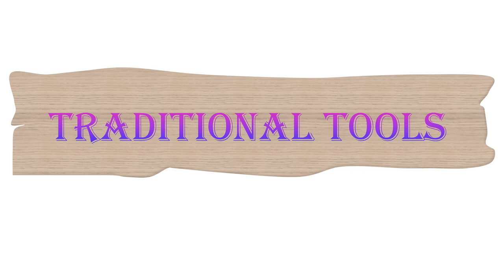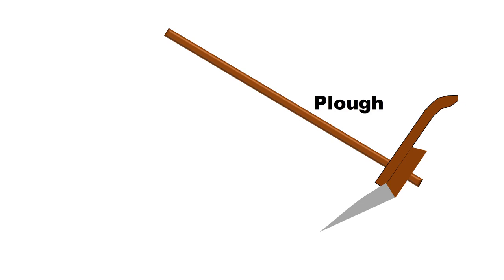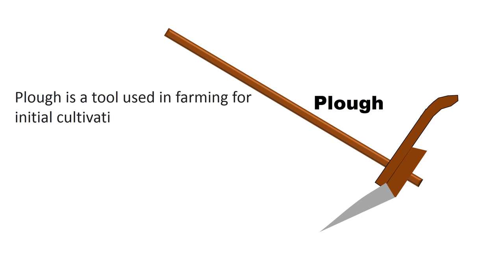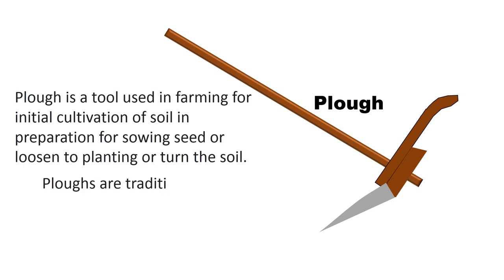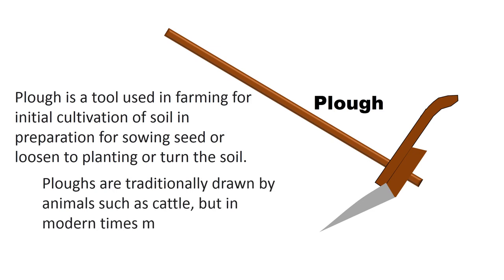Now let's discuss traditional tools one by one. A plow is a tool used in farming for initial cultivation of soil, in preparation for sowing seed, loosening, planting, or turning the soil. Plows are traditionally drawn by animals such as cattle, but in modern times may be drawn by tractors.